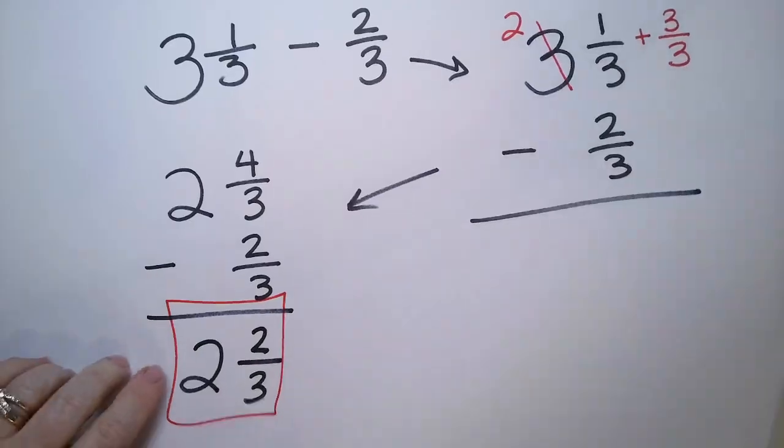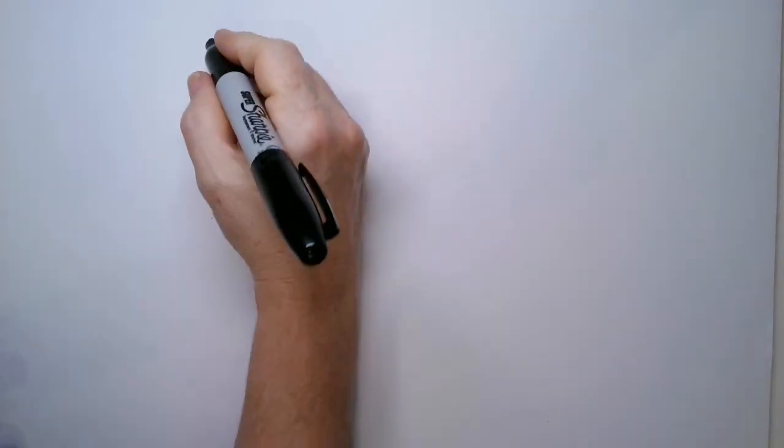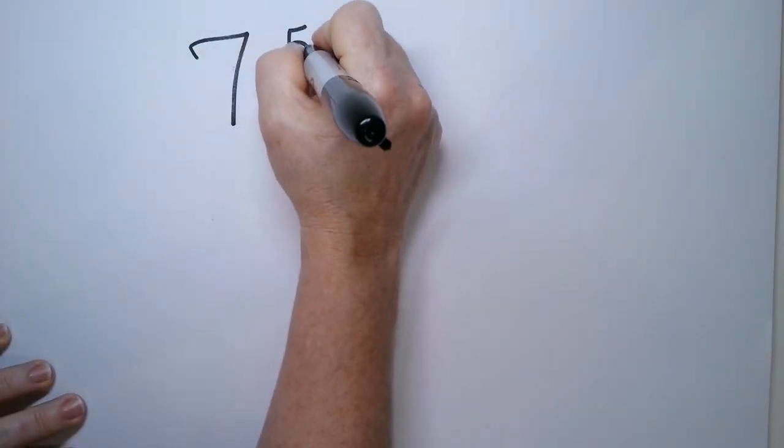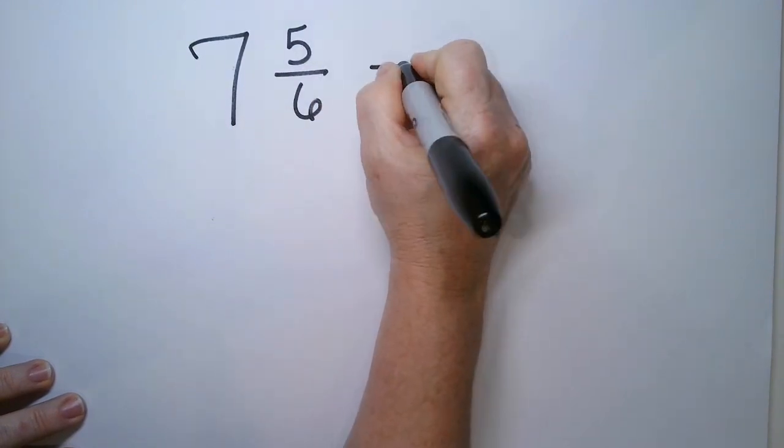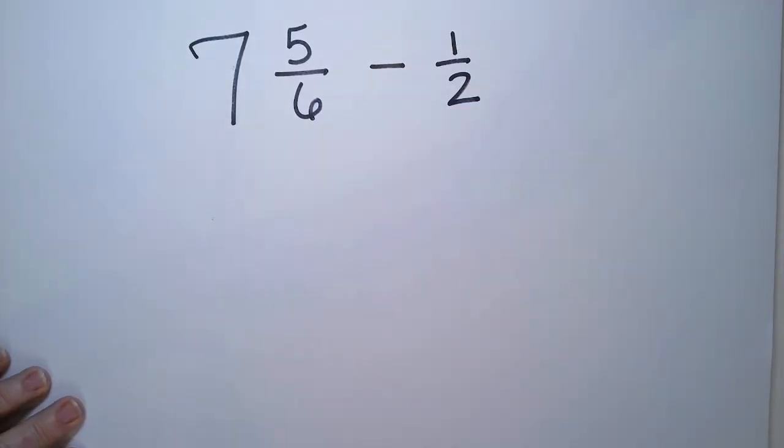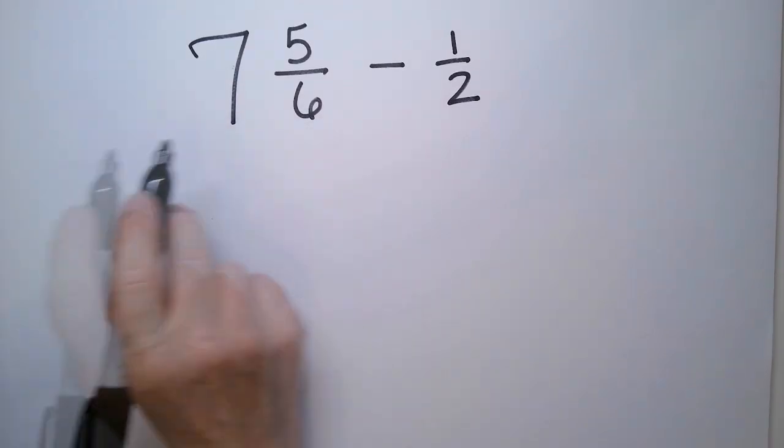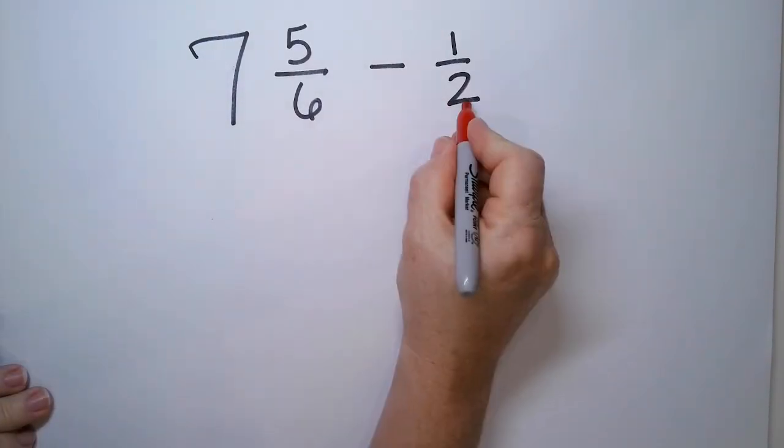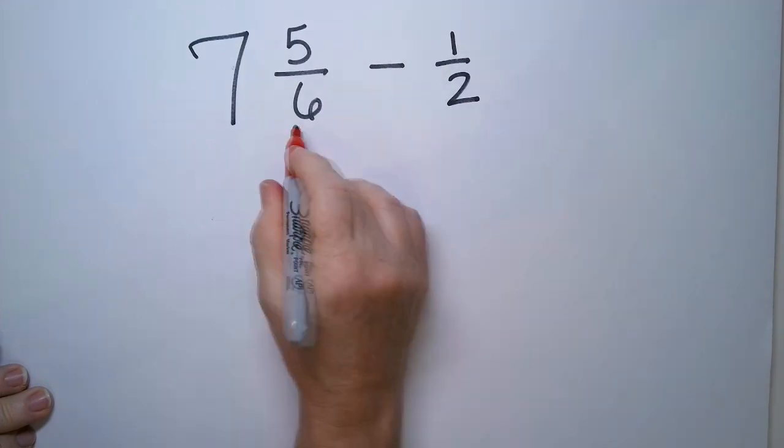Let's try another one. Suppose I have a number like seven and five sixths minus a half. How do we deal with that? So first we notice the denominators don't match. So I'm going to have to scale up one or both.